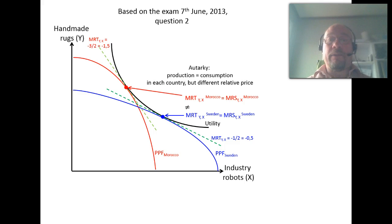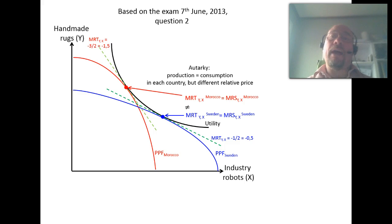So what we have here in the autarky situation is that production is equal to consumption in both countries, but we will have different relative prices. And that is the base for all international trade — as long as we have different relative prices, there are gains to be made.